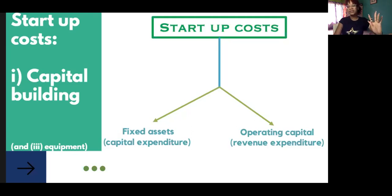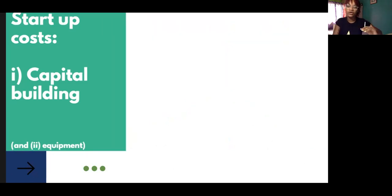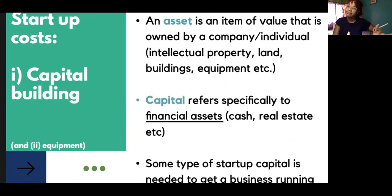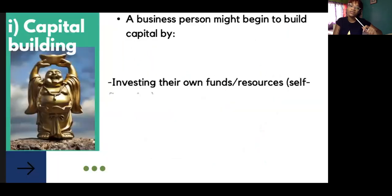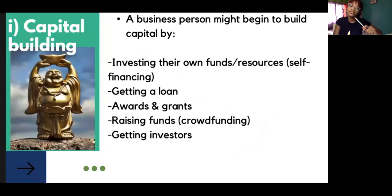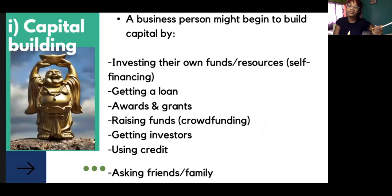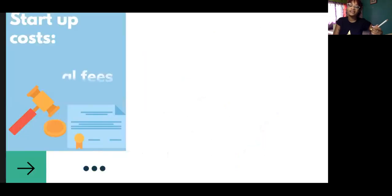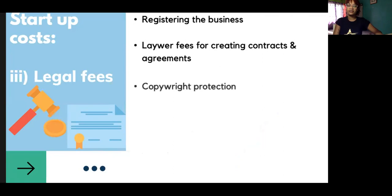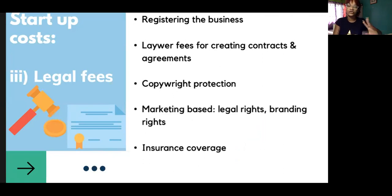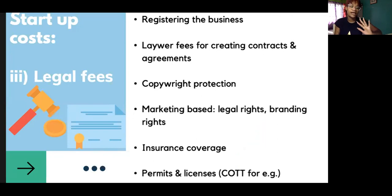Operating capital refers to things that help the business run on a day-to-day basis rather than just the preparatory costs. We looked at capital building — so getting money. We looked at fixed assets, the different types of fixed assets. We also looked at different ways of getting capital, and we looked at legal fees as startup costs: registering the business, copyright protection, marketing, insurance, licenses like a cut license, and all that jazz.